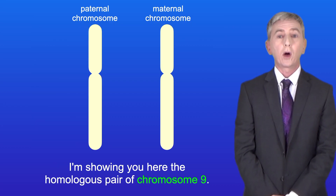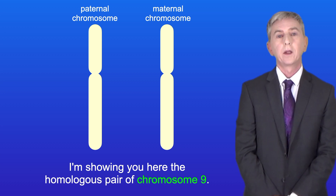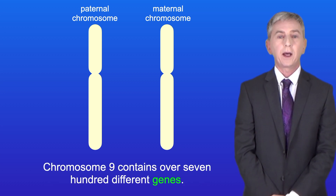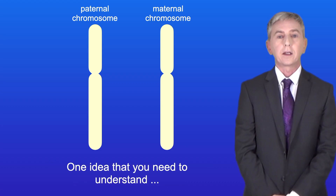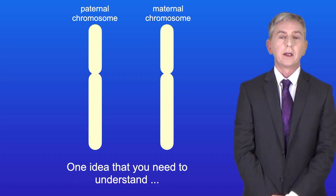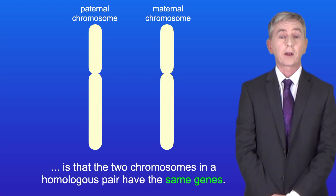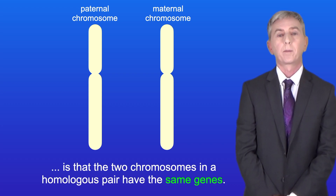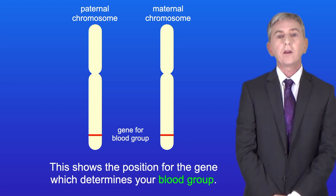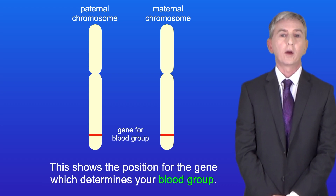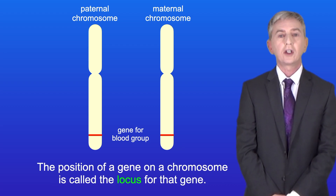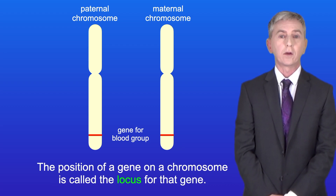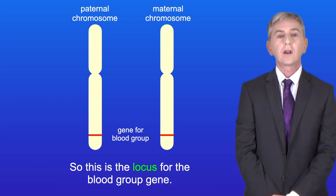Here I'm showing you the homologous pair of chromosome 9. Chromosome 9 contains over 700 different genes. The two chromosomes in a homologous pair have the same genes. This shows the position of the gene which determines your blood group. The position of a gene on a chromosome is called the locus for that gene — so this is the locus for the blood group gene.